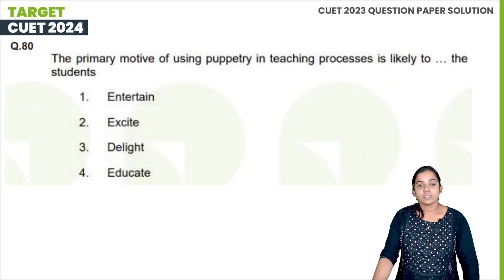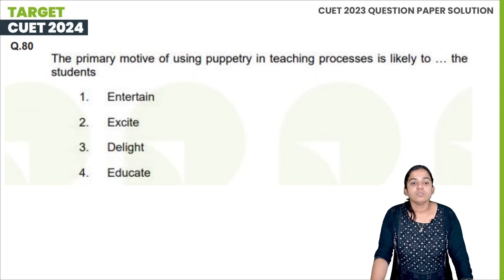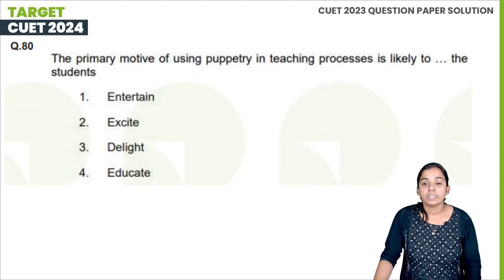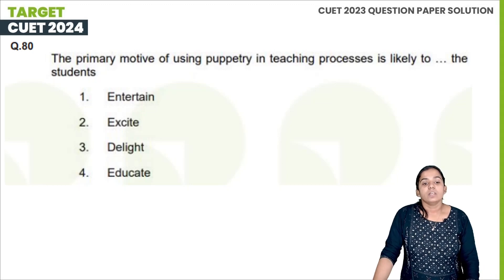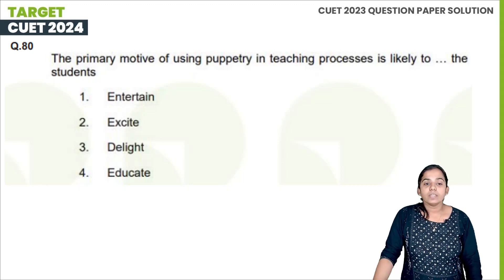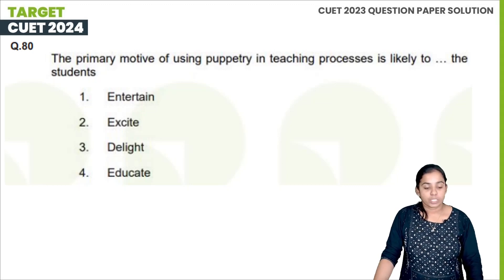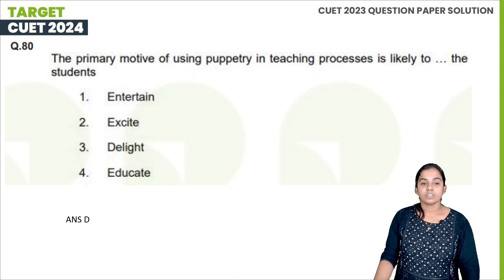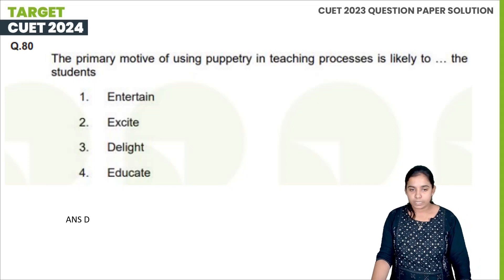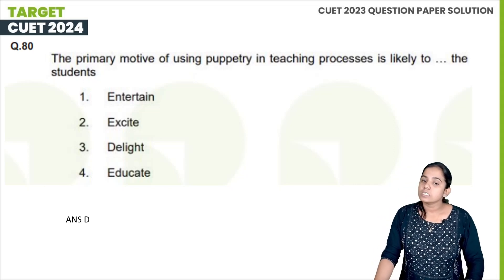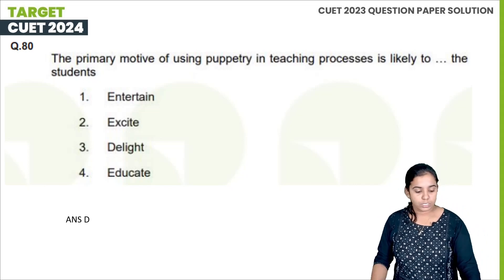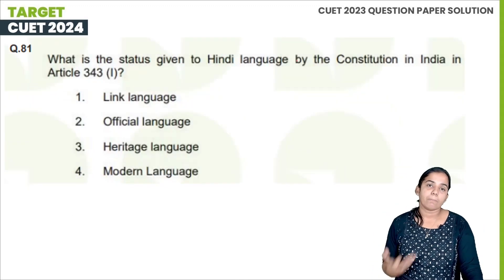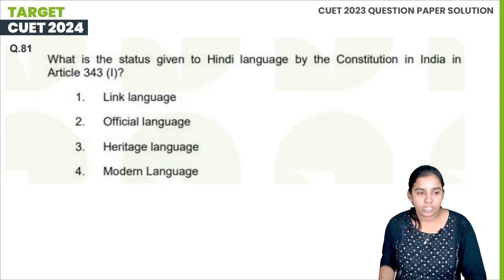The eighth question: The primary motive of using puppetry in the teaching process is likely to engage the students. The teaching process is educational — the primary motive of using puppetry is to educate and make students active participants in the learning process.